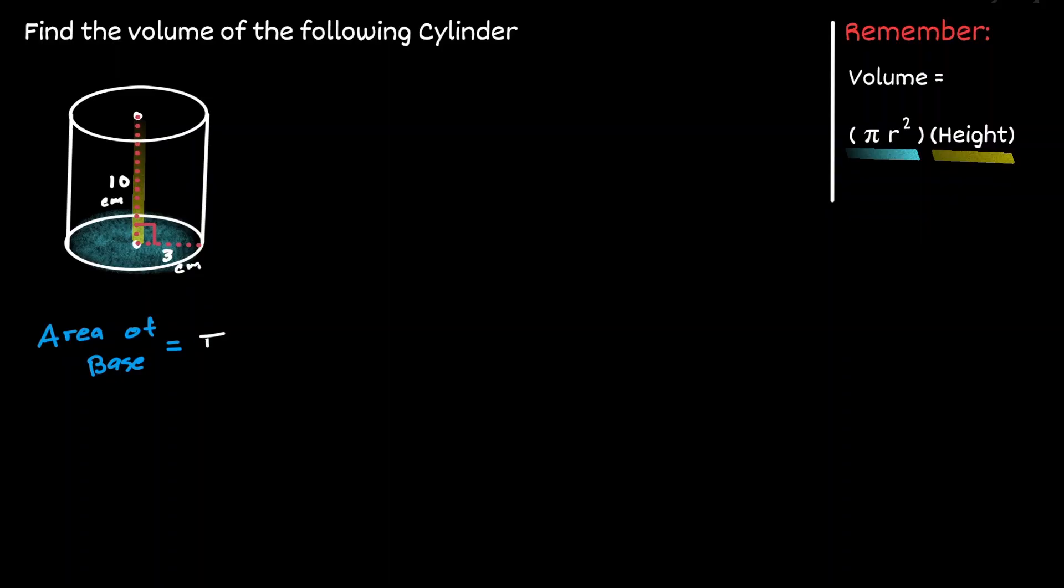So we'll have pi, but notice that the radius of the circle is 3 centimeters. So we'll have times 3 squared, which is equivalent to 9 pi centimeters squared.